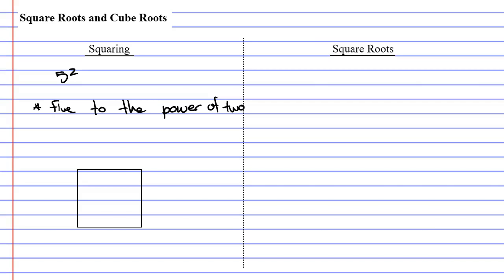Now there's another way we can say this. We can also say 5 squared. So why can we say that? Well, let's look at what 5 to the power of 2 means.